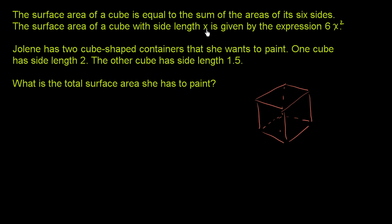The surface area of a cube with side length x, so if this is x, if this is x, if this is x, is given by the expression 6x squared. That also makes sense. The area of each side is going to be x times x. It's x squared, and there are six of them. So it's going to be 6x squared.